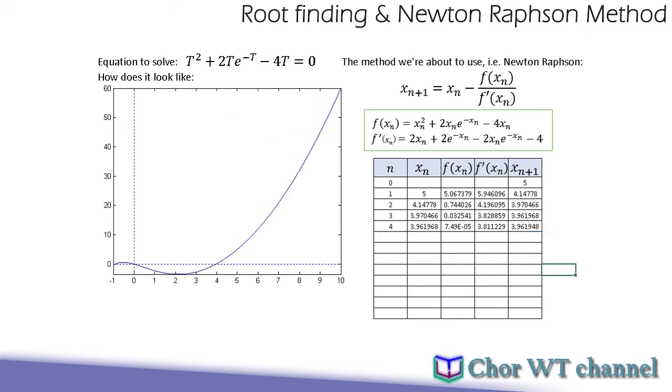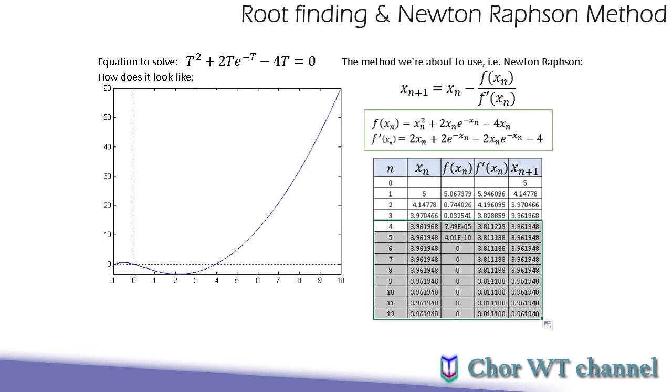So let's say if you are not satisfied with the accuracy, you can continue to calculate. And you can pretty much confirm that 3.961948 will be your solution because it has been repeated in quite a number of columns of xn and xn+1. And the most important evidence here is that your f(xn) is exactly equal to 0. So this implies that you have found the solution, one of the solutions.